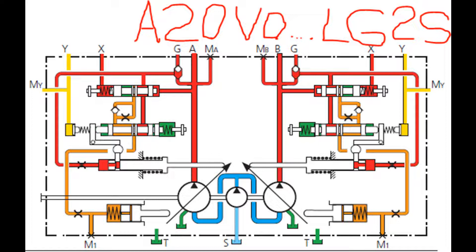LR Power Control with Stroke Limiter: The stroke limiter can be used to vary or limit the displacement of the pump continuously over the whole control range. The displacement is set in LRH with the pilot pressure PST, maximum 40 bar, applied to port Y; or in LRU by the control current applied to the proportional solenoid. A DC current of 12V (U1) or 24V (U2) is required to control the proportional solenoid.